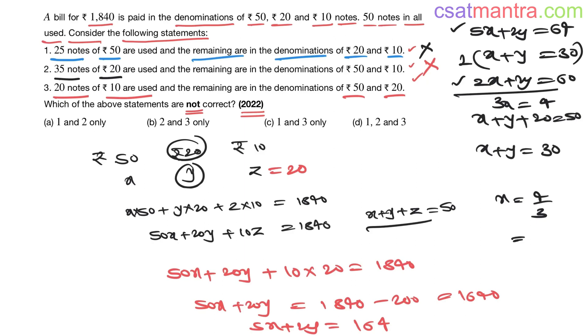164 - 60, that would be 4, so x = 4/3. Again this is decimal, so this is also not possible. x, y, z cannot be fractions or decimal numbers, they should be integers.